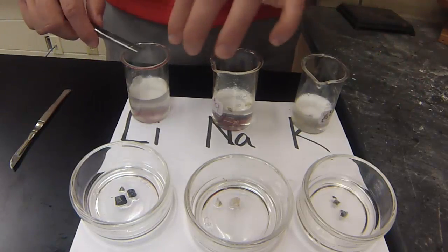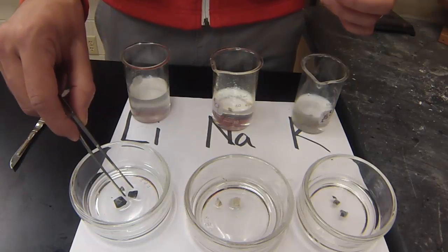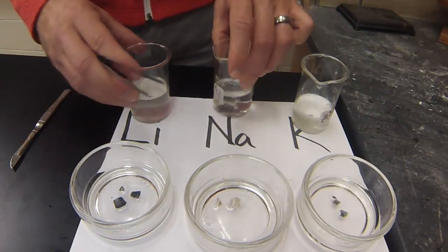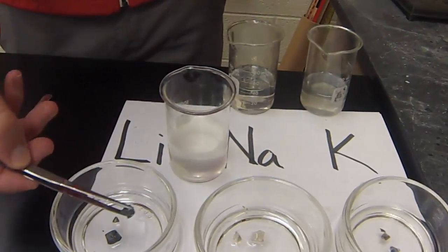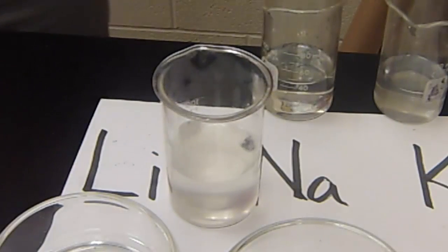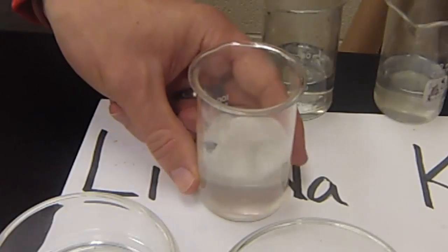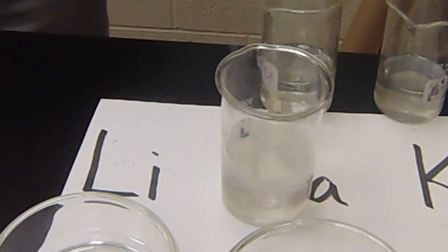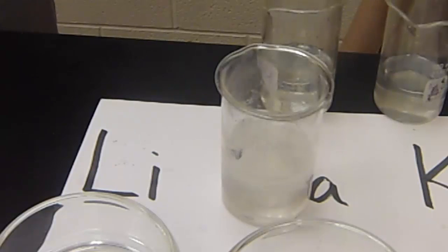I have some beakers here of water, and we'll take a look at their reactivity. Let's go ahead and start with lithium. We'll drop lithium into this beaker of water and just see what happens. As you can see, we have a lot of bubbling and what looks like some smoke being produced. This is actually water vapor. This reaction is quite hot, so the water is actually starting to boil around this piece of lithium.